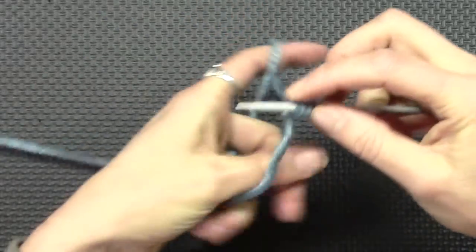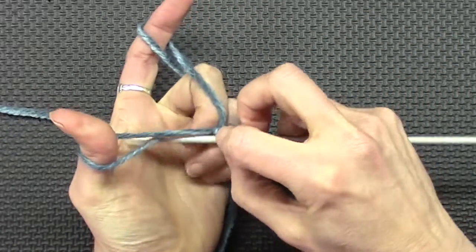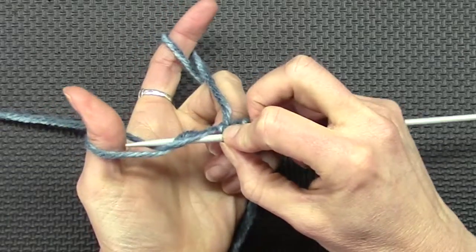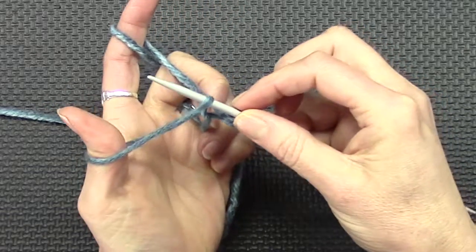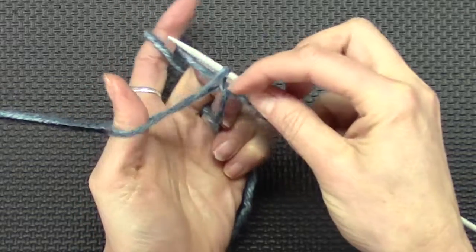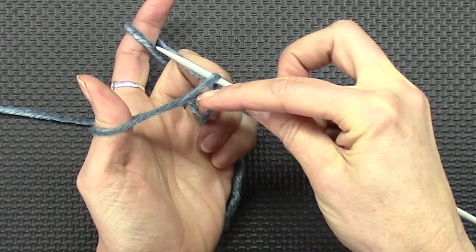And we'll try it again. Around both and through the hole in the thumb. Don't let go of anything. You've created a little gap in here. That's where you're going to pull.